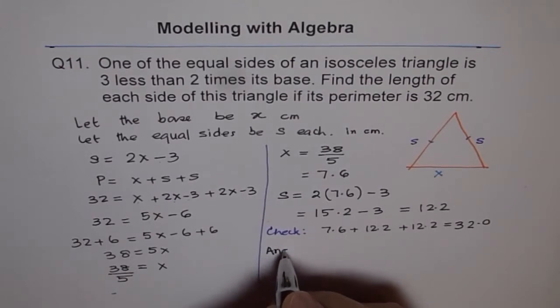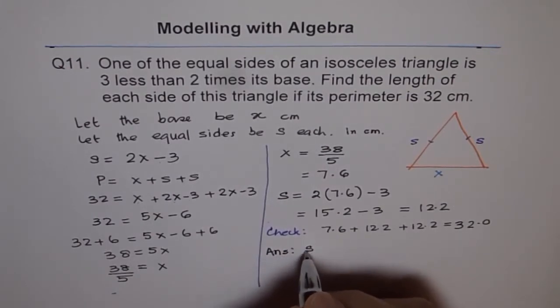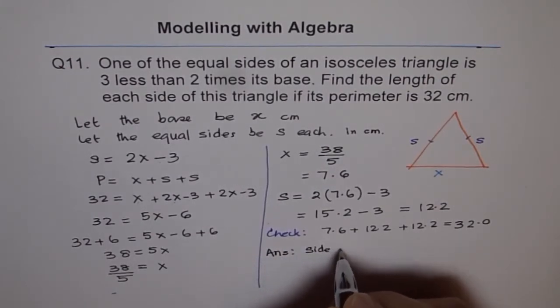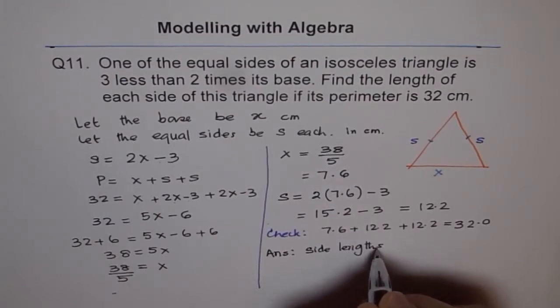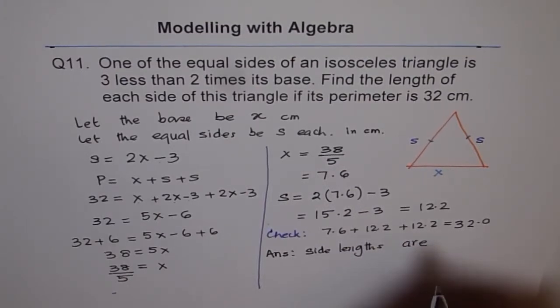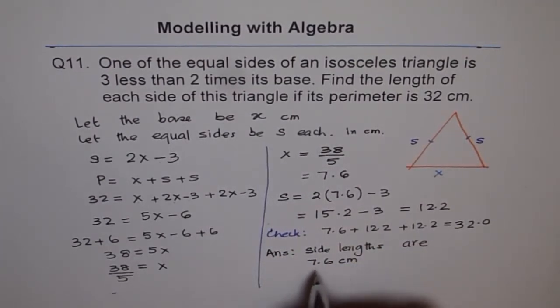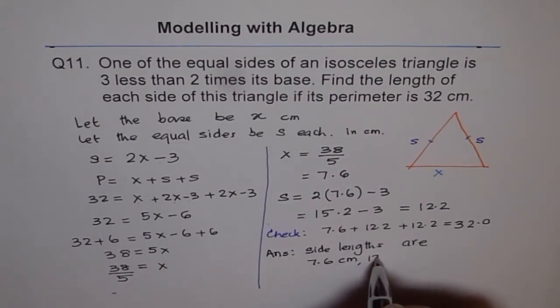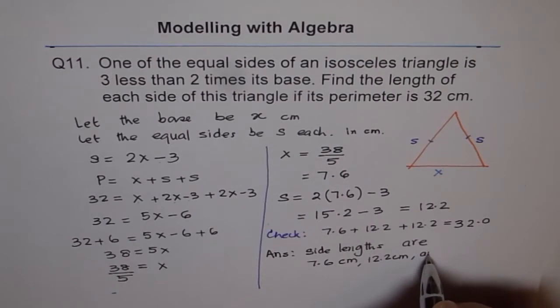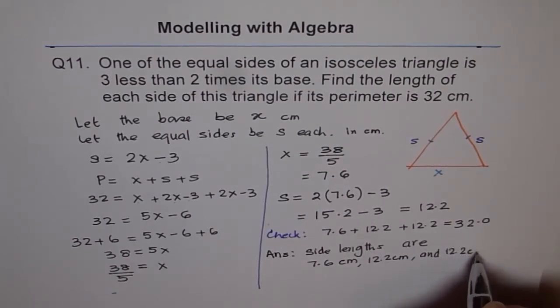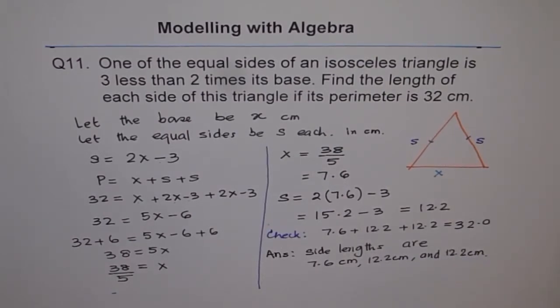So we can write down our answer as the side lengths are: 7.6 centimeters. Don't forget to write units here, this is most important. 12.2 centimeters and 12.2 centimeters. So that is how we are going to solve this problem. I hope you understand and appreciate it. Thank you.